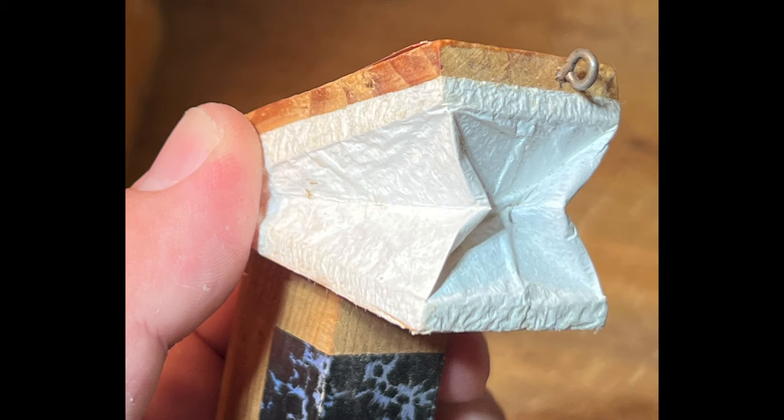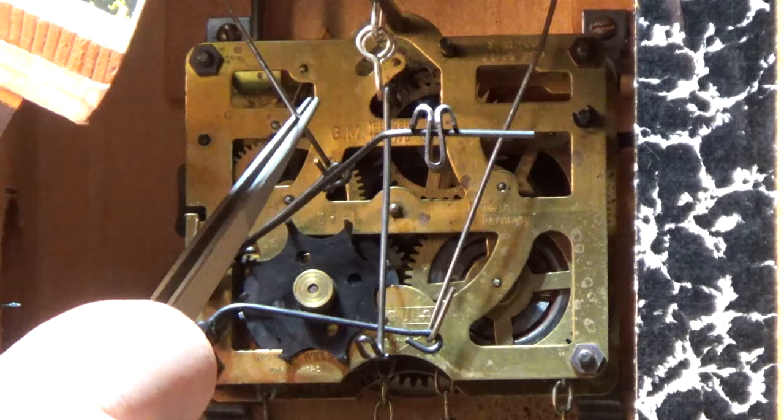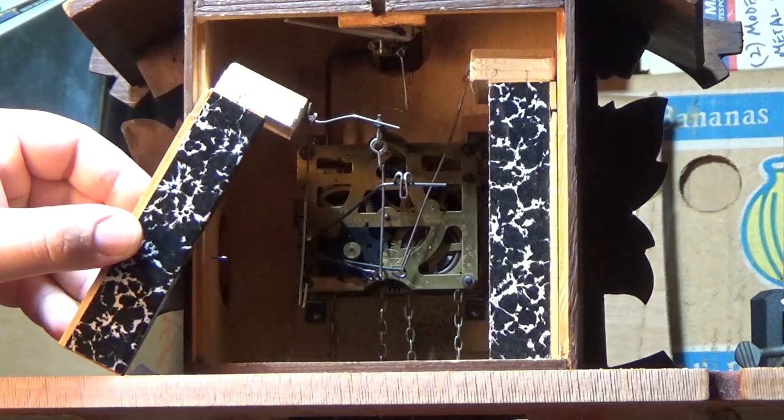Ripping the material causes you to have to replace either the material itself, which is rather labor intensive, or the entire top of the bellow. Go slow and be patient. Once the wire is disconnected from the lever, the bellow is now free to come out of the case and be set out of the way.